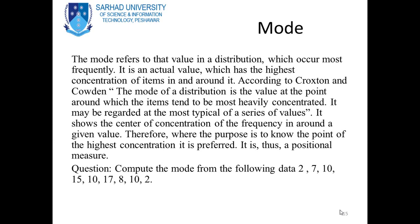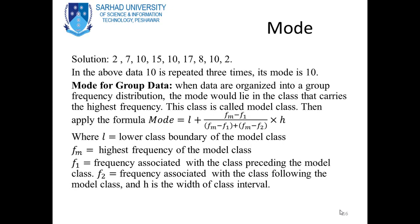Question: Compute the mode from the following data: 2, 7, 10, 15, 10, 17, 8, 10, 2. Solution: in the above data, 10 is repeated 3 times. Therefore, mode = 10.